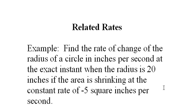So we have a circle and it's shrinking. The area is shrinking at a constant rate of negative 5 square inches per second. Therefore the radius must be shrinking, and we want to know the rate that the radius is shrinking when the radius is exactly 20 inches.